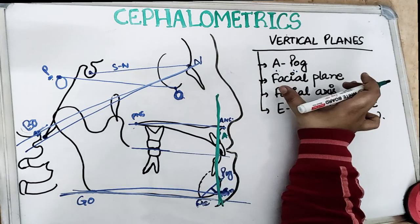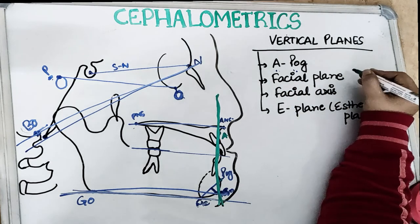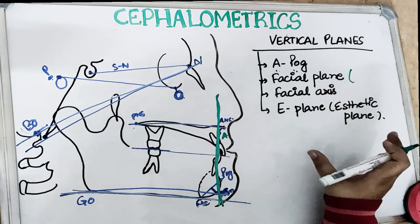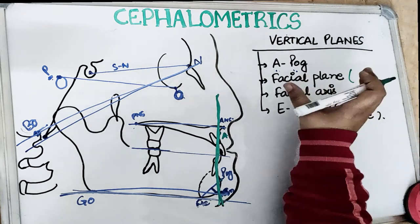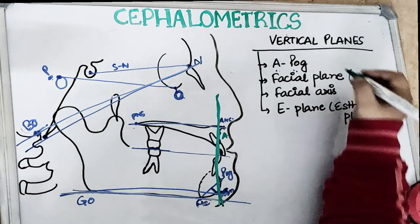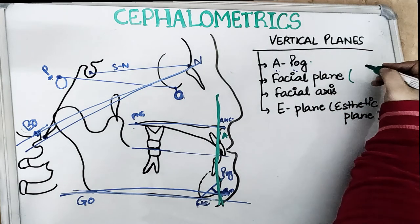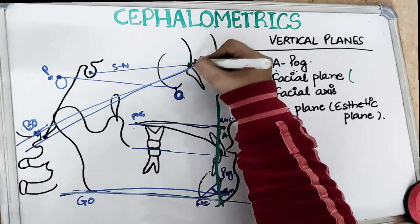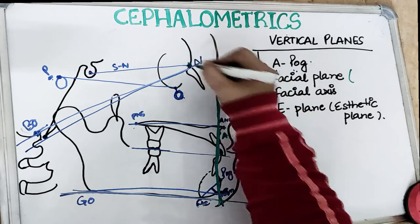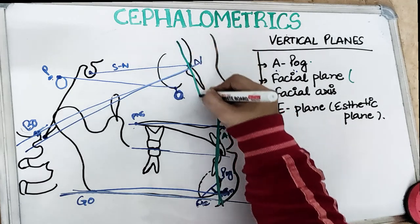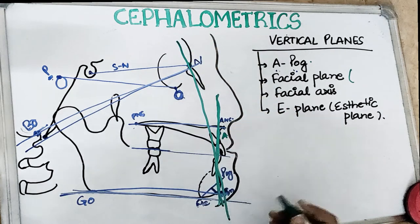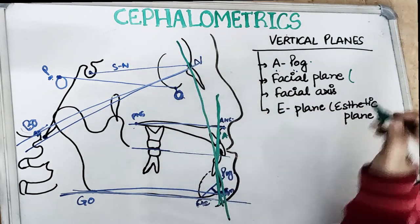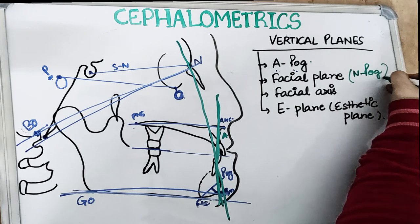The second vertical plane is the facial plane, drawn from N to pogonion — the N-Pog line. We will be studying the facial plane extensively under Downs analysis in the next video. The facial plane is a line drawn from nasion (N) to pogonion (Pog). This N-Pog line tells us about the facial profile. So the facial plane runs from nasion to pogonion.